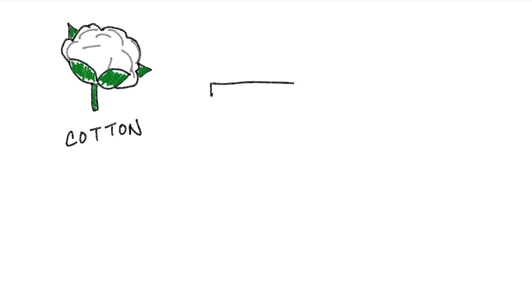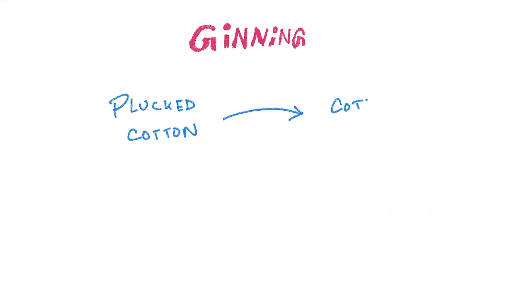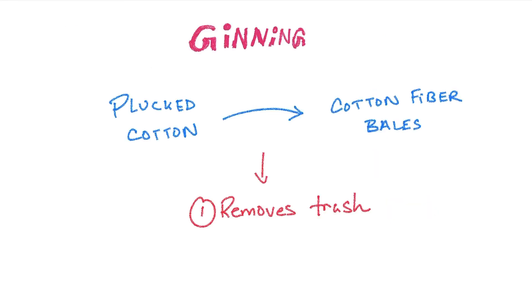Cotton is a natural fiber and is cultivated in countries like the US, Uzbekistan, China, India, Brazil, and Africa. After the cotton is plucked from the fields, it is converted to cotton fiber by a process called ginning. Ginning is basically two mechanical processes of removing trash from cotton balls and then removing seeds from the cotton fibers.